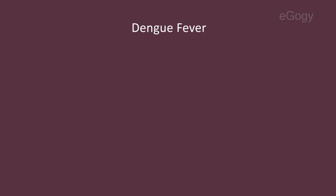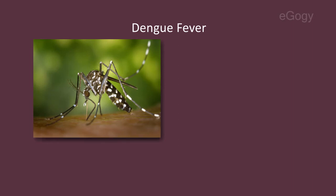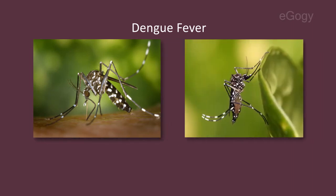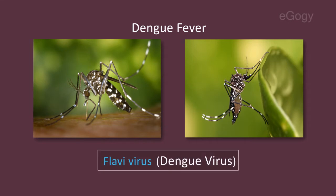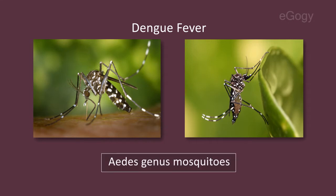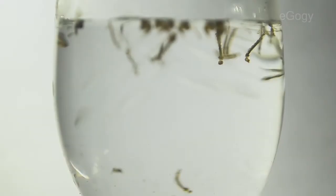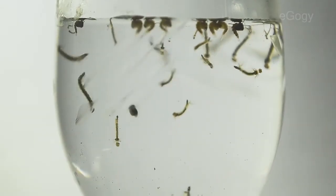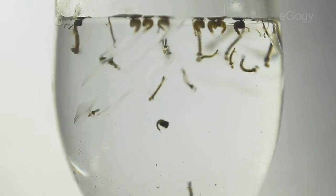Dengue fever is a viral disease caused by a flavivirus. It is transmitted to people by Aedes genus mosquitoes, which reproduce in stagnant water locations around habitations.